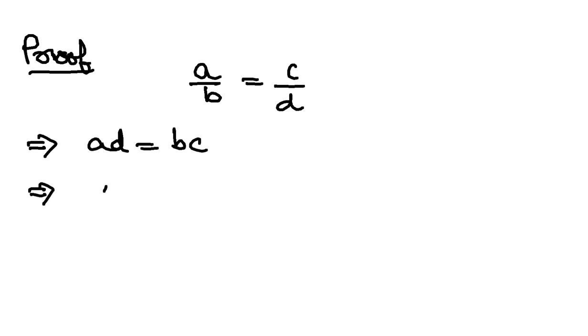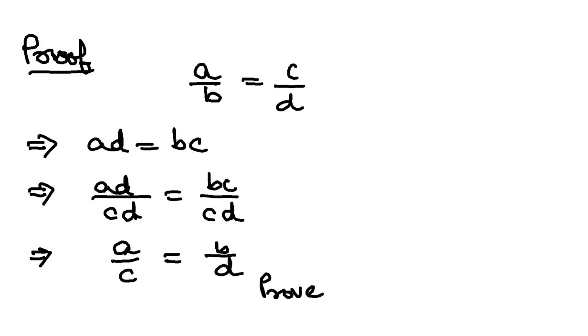Now, both left and right side I will divide by cd. So here also bc by cd. In the left hand side, d and d will be cancelled, so we will be left with a/c. Right side, c and c cancel, giving b/d. That is exactly alternendo.